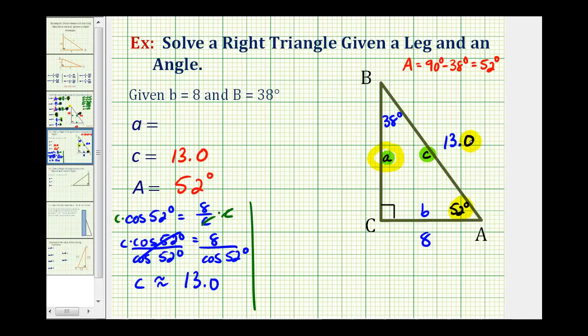Now we have the option of using side c, which is approximately 13.0, or side b, which is exactly eight units. I'm going to use side b, because I know this is the exact value. If I use a rounded value of side c, there will be more of an error.